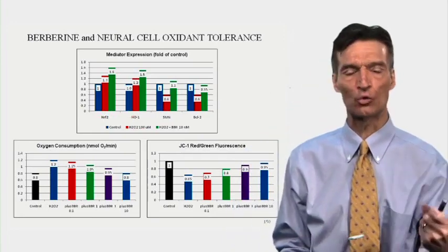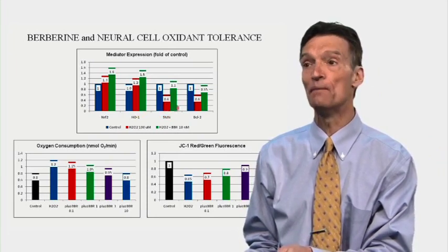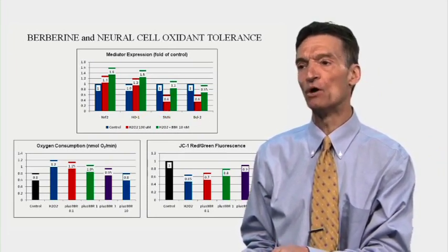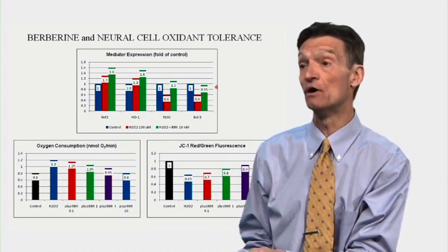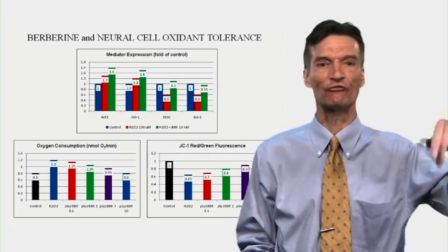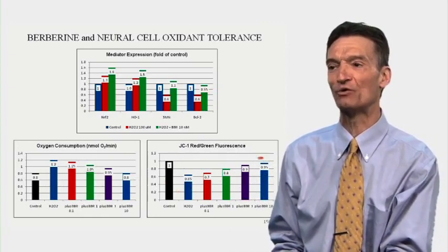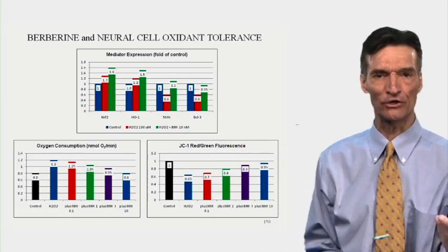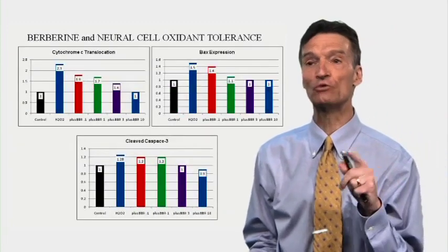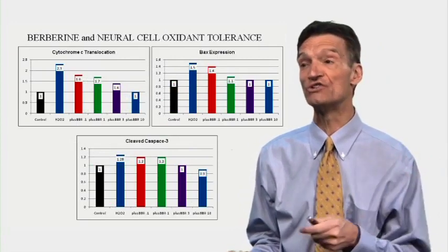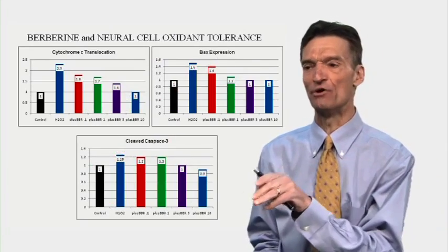SMN — survival motor neuron protein — is critical for the viability of nerve cells. It is lost in response to hydrogen peroxide oxidative stress, but it's preserved with hydrogen peroxide plus berberine. Bcl-II, an anti-apoptotic molecule, is lost with hydrogen peroxide but preserved with peroxide plus berberine. Oxygen consumption — a marker of free radical generation — rises with oxidative stress and is blunted with berberine. JC-1 red-green fluorescence, a marker of mitochondrial failure, shows mitochondria failing due to oxidative stress — ameliorated with berberine. Cytochrome C translocation and Bax expression rise with oxidative stress; there's protection with berberine.